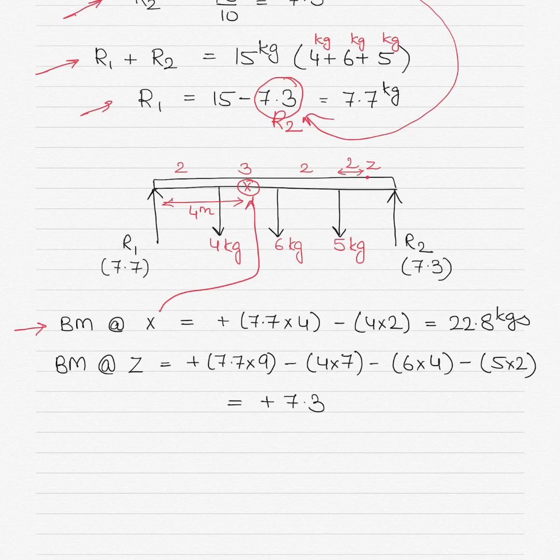This equals 22.8 kilograms. Similarly, the bending moment at Z will be 7.7×9. Why is it 9? Because if you take the distance from R1 up to Z, it is 2+3+2+2 = 9. Then the forces acting downwards: 4×7 because the distance from 4 kilograms to Z is 7, then 6×4 because the distance from 6 kilograms to point Z is 4, minus 5×2. The weights are all acting downwards and those are negative; the one acting upwards, R1, is positive.